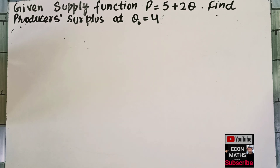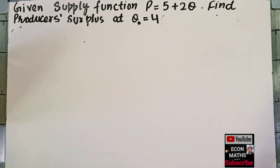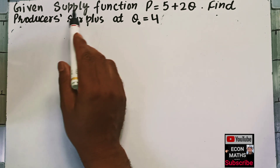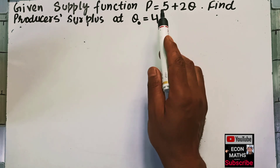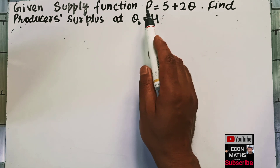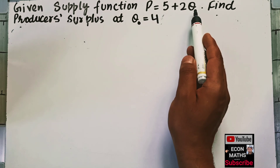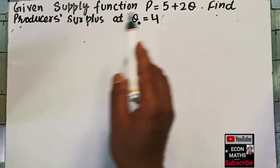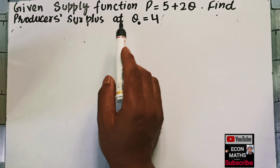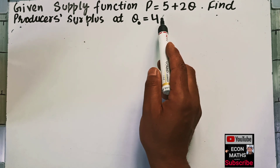Hi, this is Hilal. In this video on the mathematical economics series, we will solve a numerical on producer surplus, which is the application of derivatives in economics. The question is: given the supply function P = 5 + 2Q, where P is the price and Q is the quantity, find the producer surplus at Q = 4.